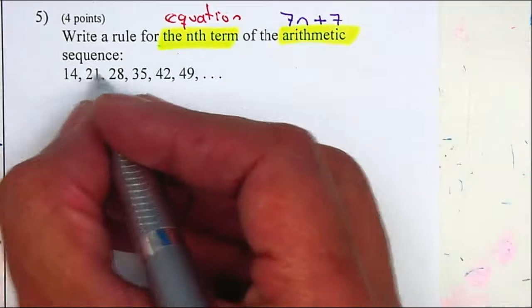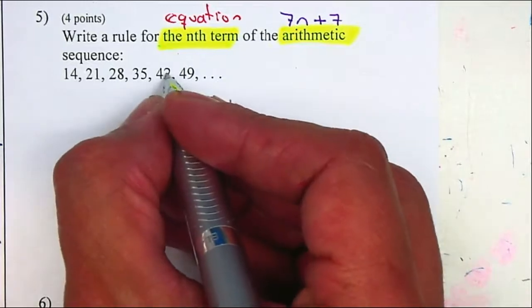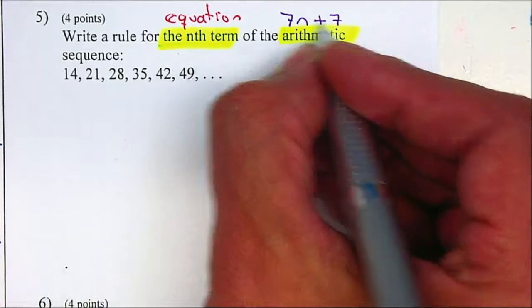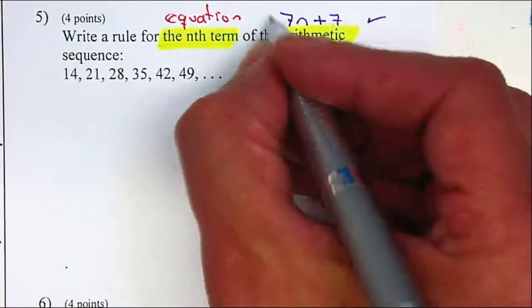If I plug in a 1, 2, 3, 4, 5, should give me a 42. 7 times 5 is 35, plus 7 is 42. So that should be your answer.